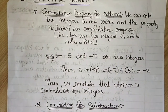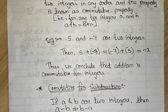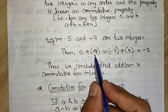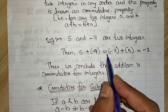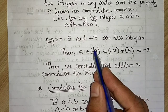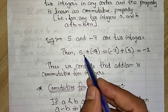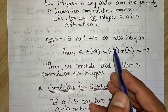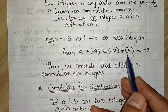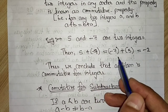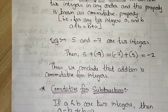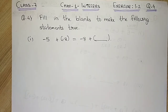This is the commutative property for addition. The example I gave was: 5 plus minus 7 is exactly equal to minus 7 plus 5. That is, if I write the second number as the first and the first as the second, I get the same result — minus 2 on both sides. LHS equals RHS.